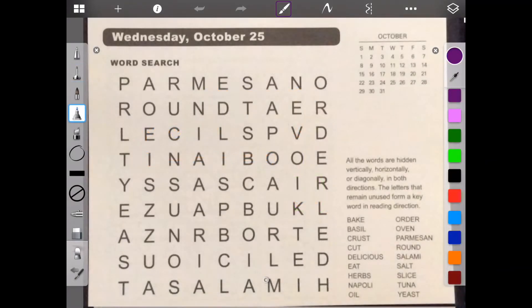Hello, welcome to Brain Games Calendar 2017. We're in week 43, day 3. We have word search. Let's begin. All the words are hidden vertically, horizontally, or diagonally, in both directions. The letters that remain unused form a keyword in reading direction.